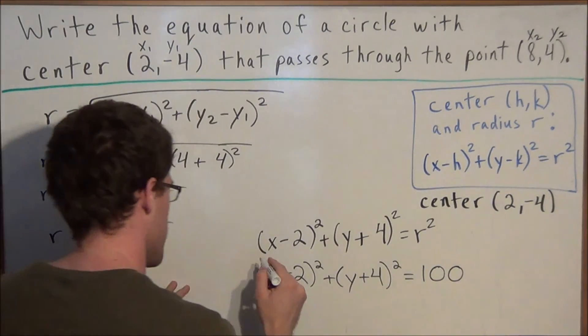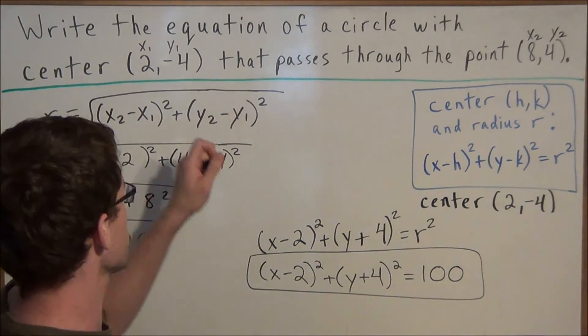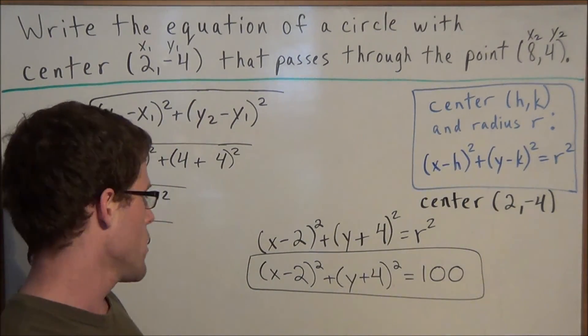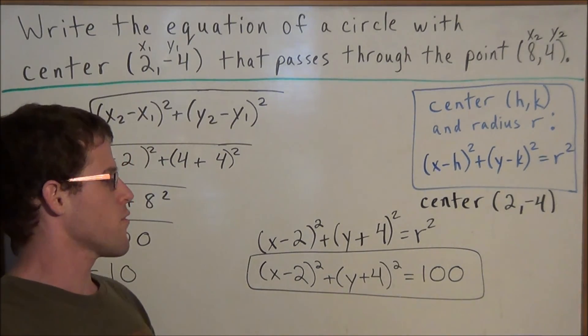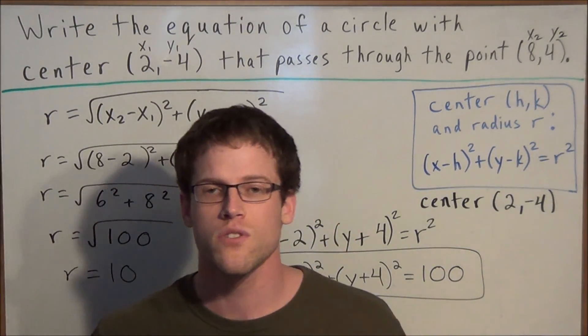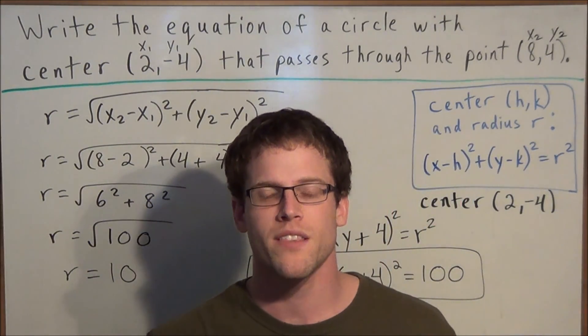So this is our final answer. The equation of the circle with center 2 negative 4 passing through the point 8, 4 is X minus 2 squared plus Y plus 4 squared is equal to 100. Okay, well this is going to conclude this video on writing the equation of a circle. Thank you all for watching and I hope that this was helpful.